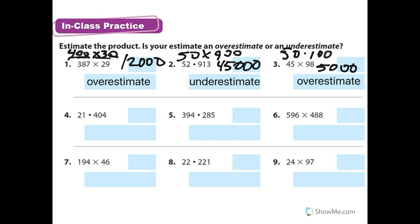Remember, estimate it and then say if it's an overestimate or an underestimate. If you're rounding up and making both numbers larger, it's an overestimate. If you're rounding down, making both numbers smaller, it's an underestimate. You've got to decide with both numbers — if you round up one, you round up the other. Go ahead and do 4, 5, and 6, and we'll go over it.